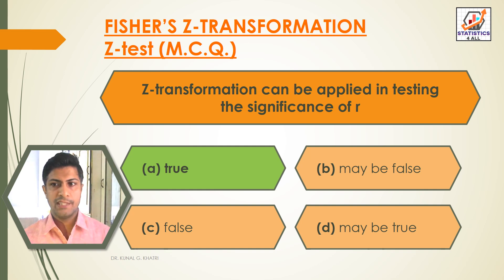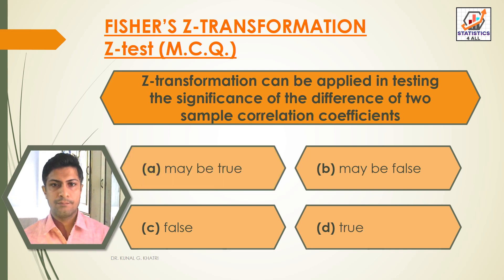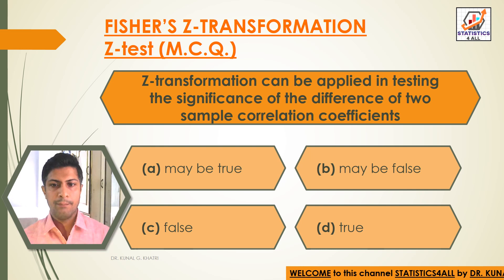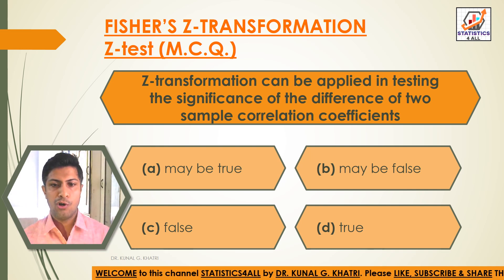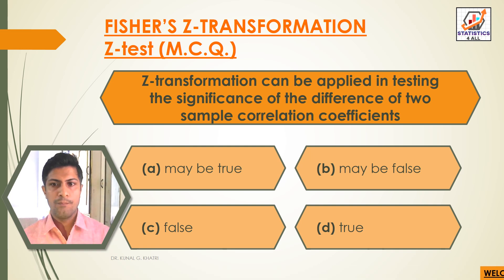Z-Transformation can be applied in testing the significance of R. Z-Transformation can also be applied in testing the significance of the difference of two sample correlation coefficients. Option A: May be true. Option B: May be false. Option C: False. Option D: True. Answer: Option D, True.